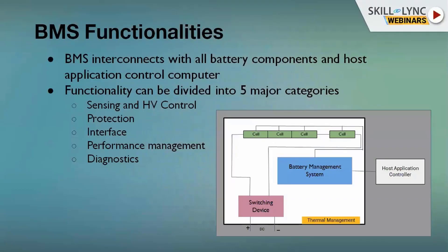Let us discuss the functions that have to be satisfied by a battery management system. The BMS basically interconnects with battery components such as cells and battery pack modules, as well as system subsystems such as the cooling system, the battery pack housing, and the monitoring of high voltage and low voltage leakage currents. All this information is processed and necessary steps are taken care of by the BMS. The functionalities can be divided into five major categories.